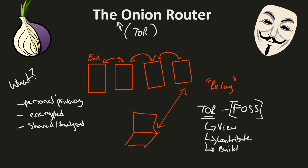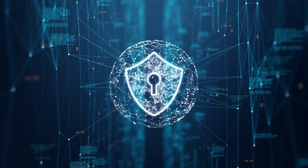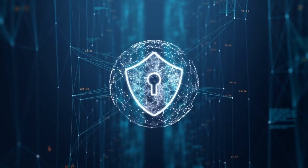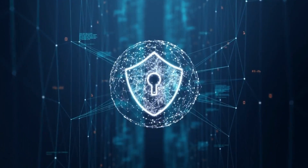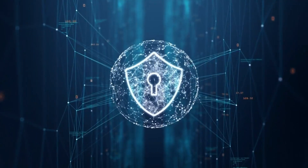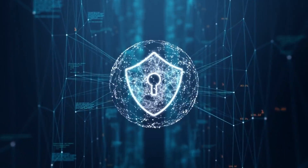Let's talk about how Tor was created. This network routing method was created in the 1990s — probably mid-90s — by the USNRL, also known as the United States Naval Research Lab, and was intended to protect American intelligence online. Tor was originally made as a way to encrypt data transferred over networks in such a way where it couldn't be intercepted.